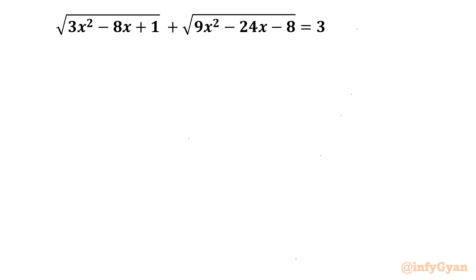Welcome to family Infigyan. In this very exciting video on Algebraic Challenging Equations, we are going to take up one interesting radical equation problem. The equation is: square root of (3x² - 8x + 1) plus square root of (9x² - 24x - 8) equals 3, where x belongs to the real numbers. We have to find the real solutions.